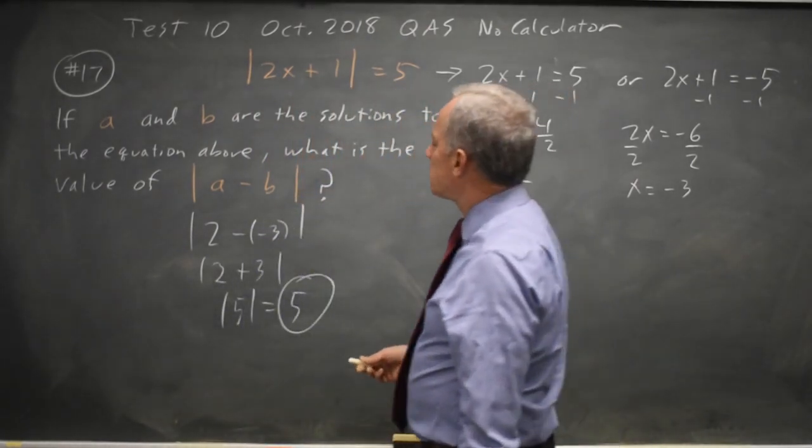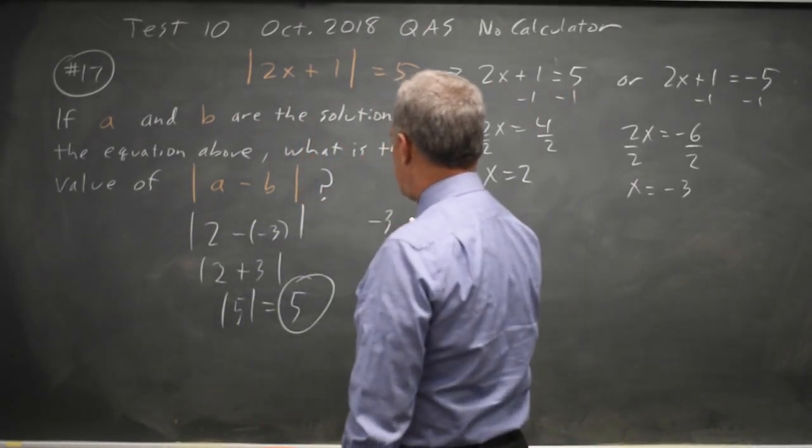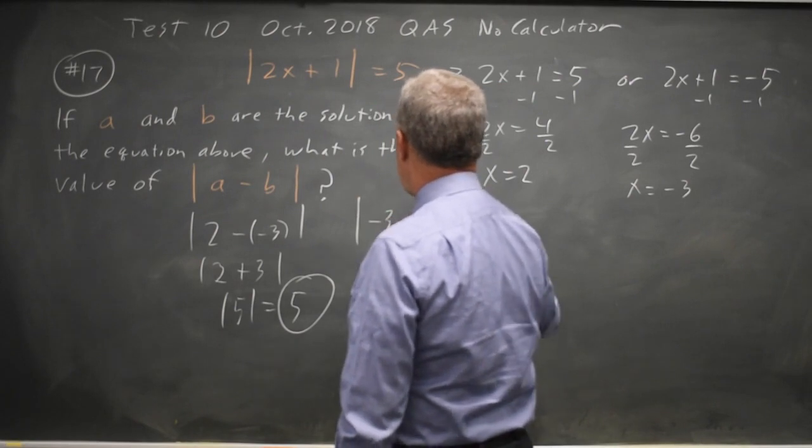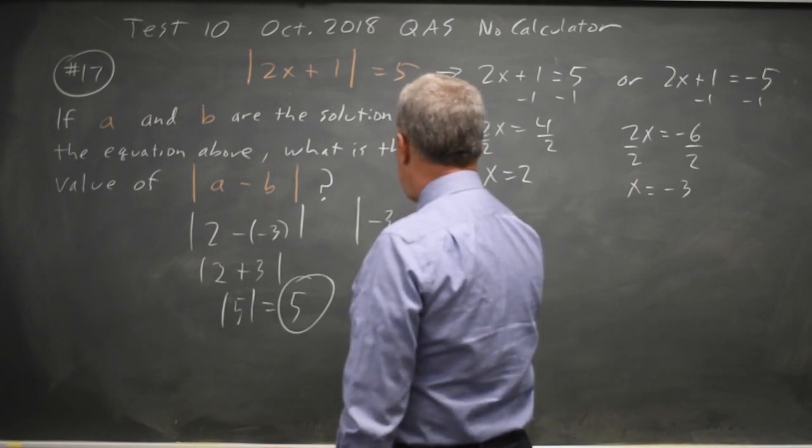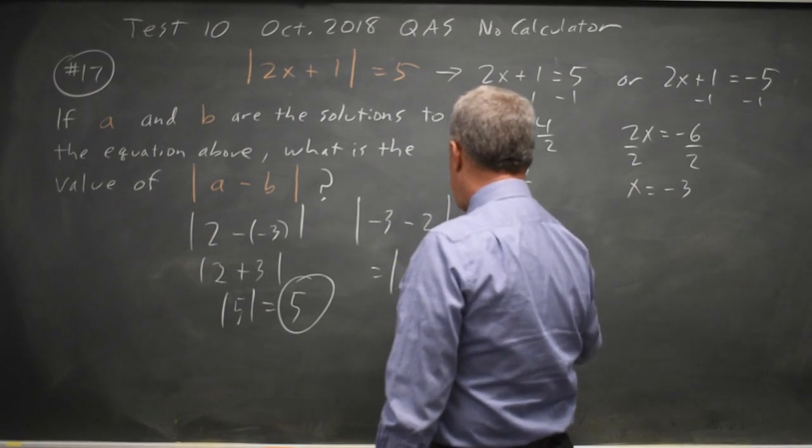If you put them in the opposite order, it wouldn't matter. Negative 3 minus 2, absolute value is negative 5, which is again 5.